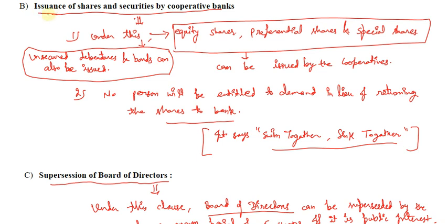Coming to the second clause that talks about the issuance of shares and securities by cooperative banks. Under this, the cooperative banks can issue equity shares, preferential shares, and special shares. They can also issue unsecured debentures and bonds.